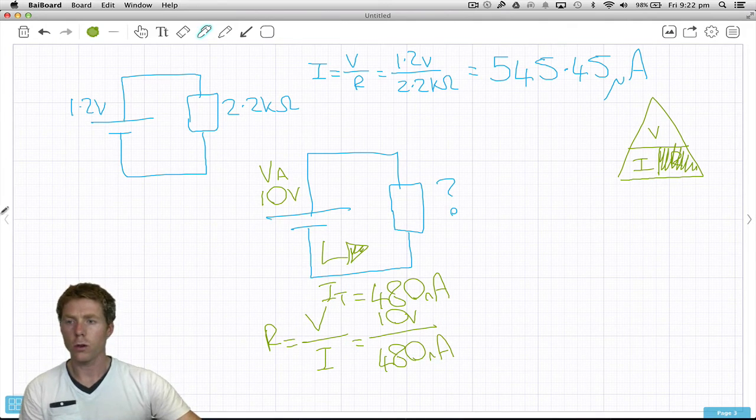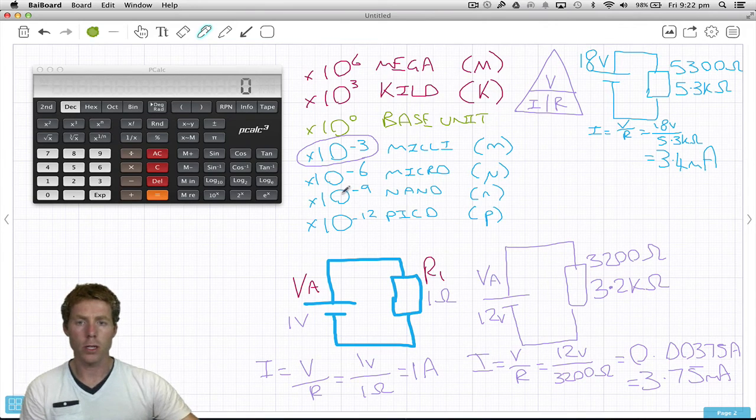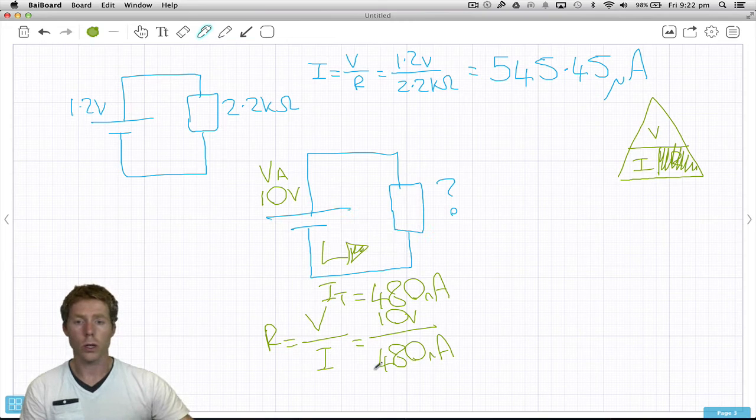Resistance is voltage divided by current. The voltage is 10 volts, the current is 480 nano amps. For reference, nano is times 10 to the negative 9.